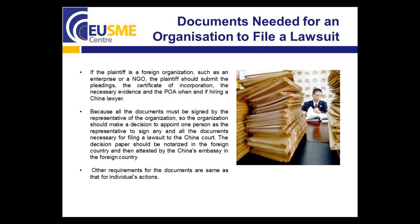Documents necessary for a foreign organization to file a lawsuit. If the plaintiff is a foreign organization such as an enterprise or NGO, the plaintiff should provide the pleadings, certificate of incorporation, necessary evidence, and power of attorney when hiring a Chinese lawyer. Because all documents must be sent by the representative of the organization, the authority of the organization should make a decision to appoint one person as the representative to sign all documents necessary for filing the lawsuit. This decision paper should be notarized and then attested. Other requirements for documents are similar to those for an individual plaintiff.